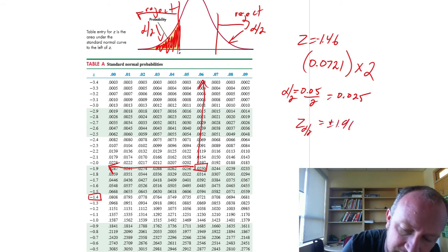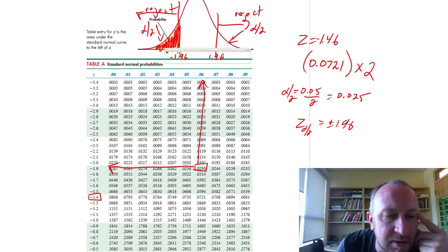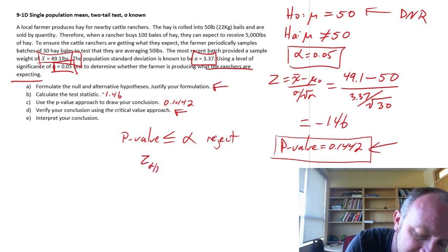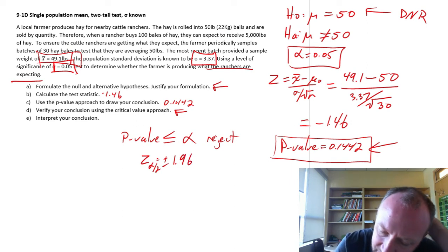Plus or minus 1.96. Because we have the negative down here and we have the positive up here. So, coming back to our problem with our z alpha by 2 is equal to plus or minus 1.96. And here I have a test statistic equal to negative 1.46.